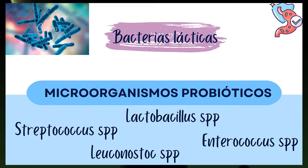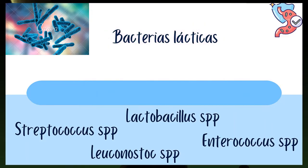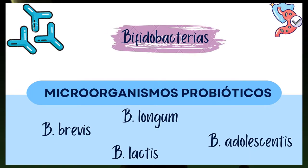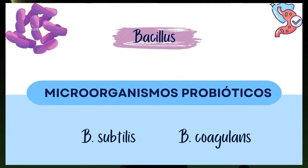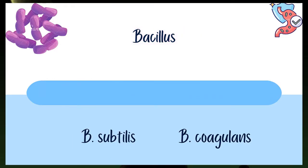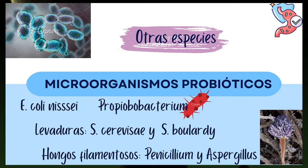Los microorganismos probióticos incluyen principalmente bacterias lácticas del género Lactobacillus, además de Streptococcus, Leuconostoc, Enterococcus, bifidobacterias como B. bifidum, B. longum, B. infantis, B. brevis, B. lactis y B. adolescentis, Bacillus subtilis y B. coagulans. Otras especies incluyen Saccharomyces cerevisiae, Saccharomyces boulardii, Propionibacterium, Penicillium y Aspergillus.